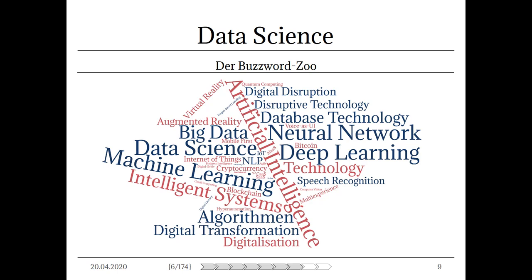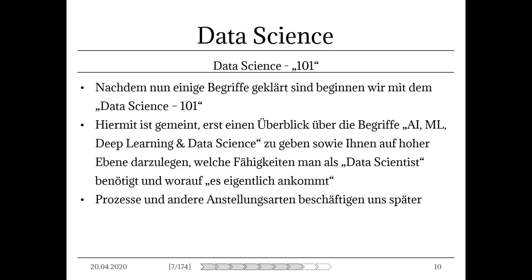Sie haben einen Überblick von einigen Begriffen bekommen. Wir haben uns aber noch nicht damit befasst, was Data Science eigentlich ist. Deswegen beginnen wir jetzt mit dem Data Science 101. Wir geben einen Überblick über die Begriffe Artificial Intelligence, Machine Learning, Deep Learning und Data Science – also künstliche Intelligenz, maschinelles Lernen, tiefes Lernen und die Datenwissenschaften. Wie hängt das denn alles miteinander zusammen?